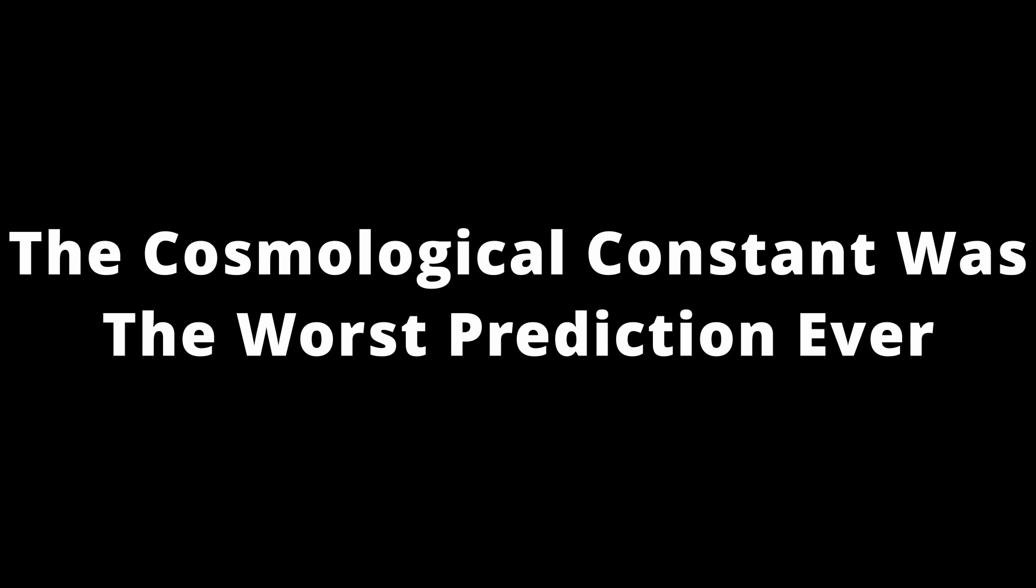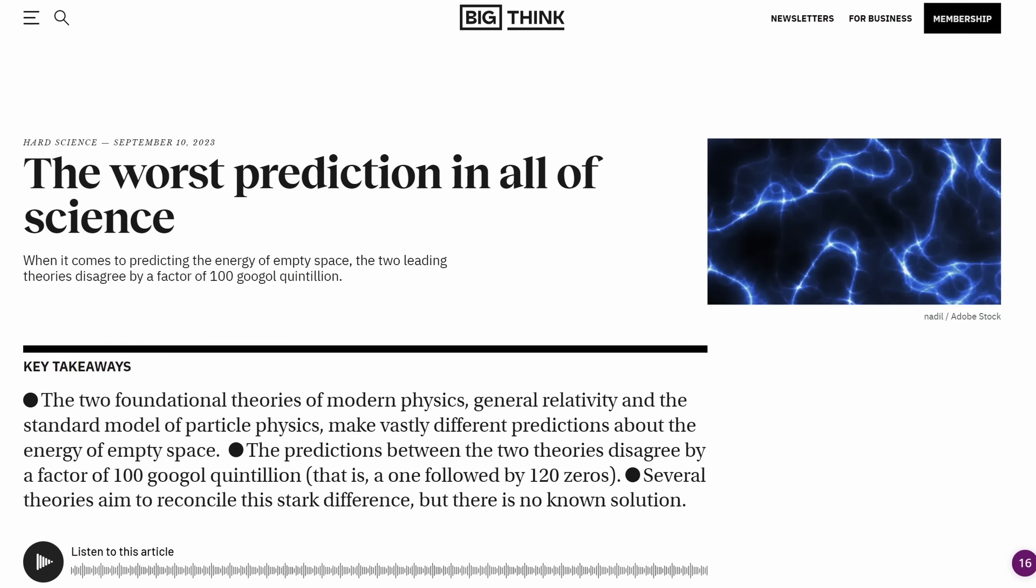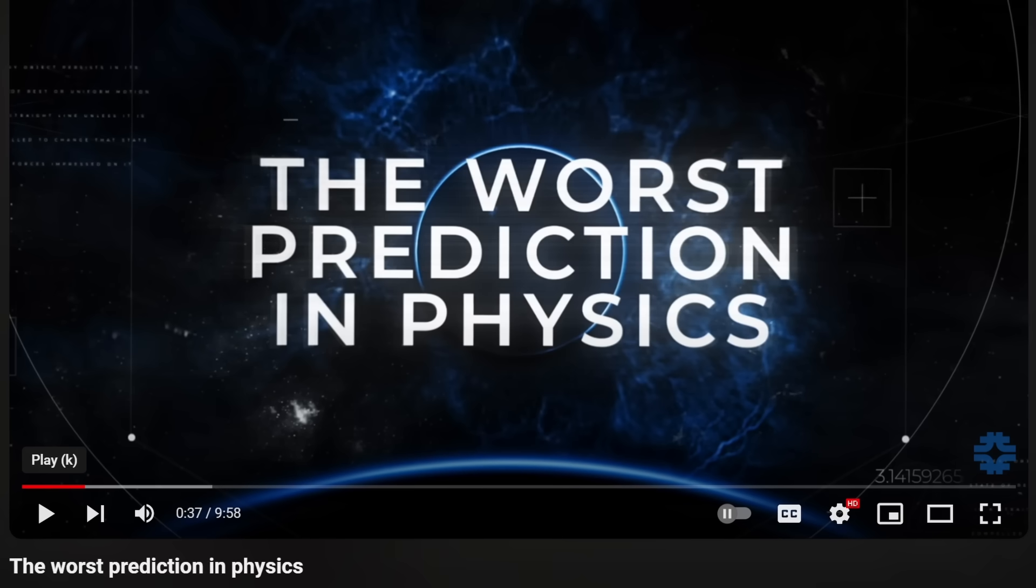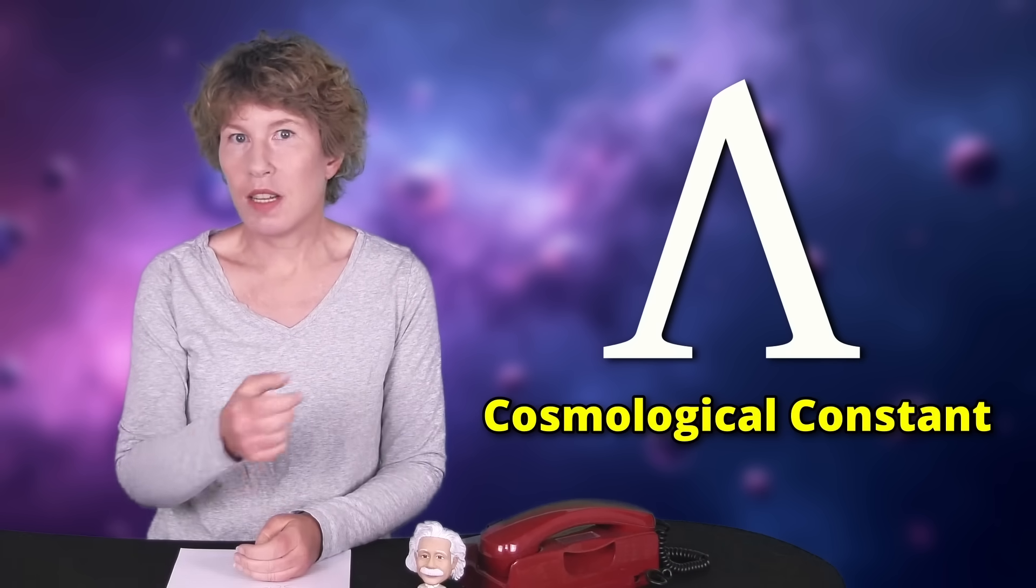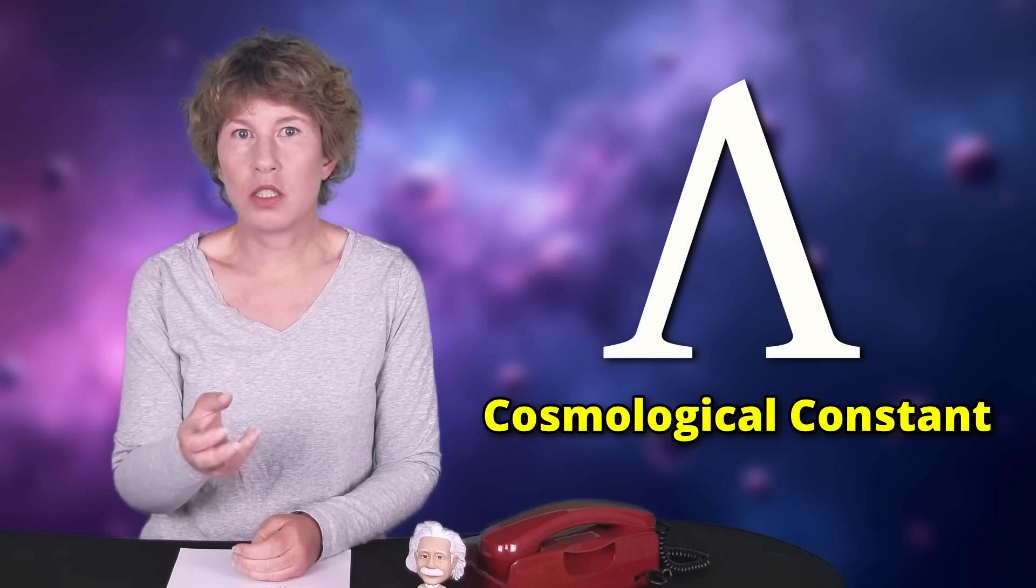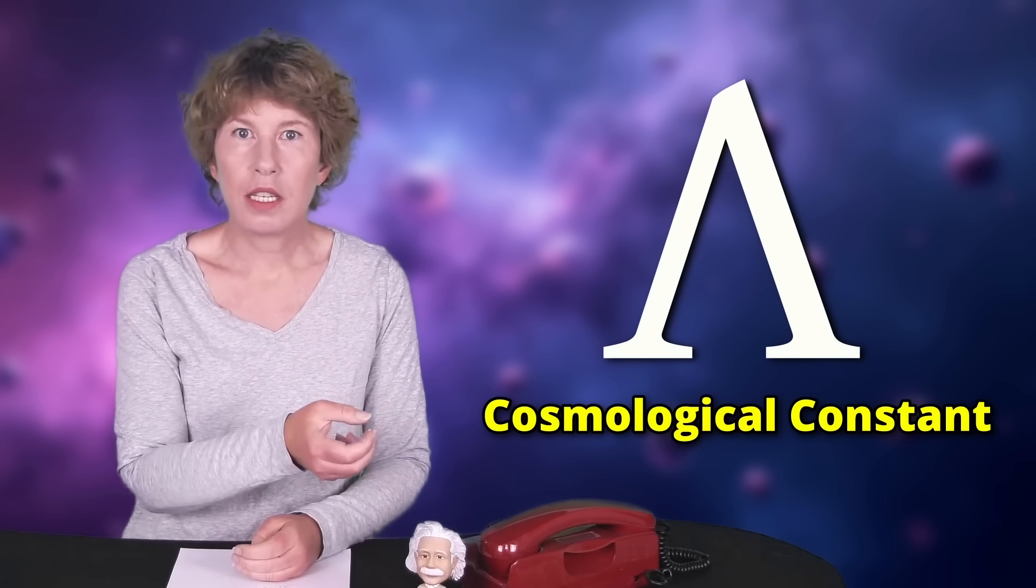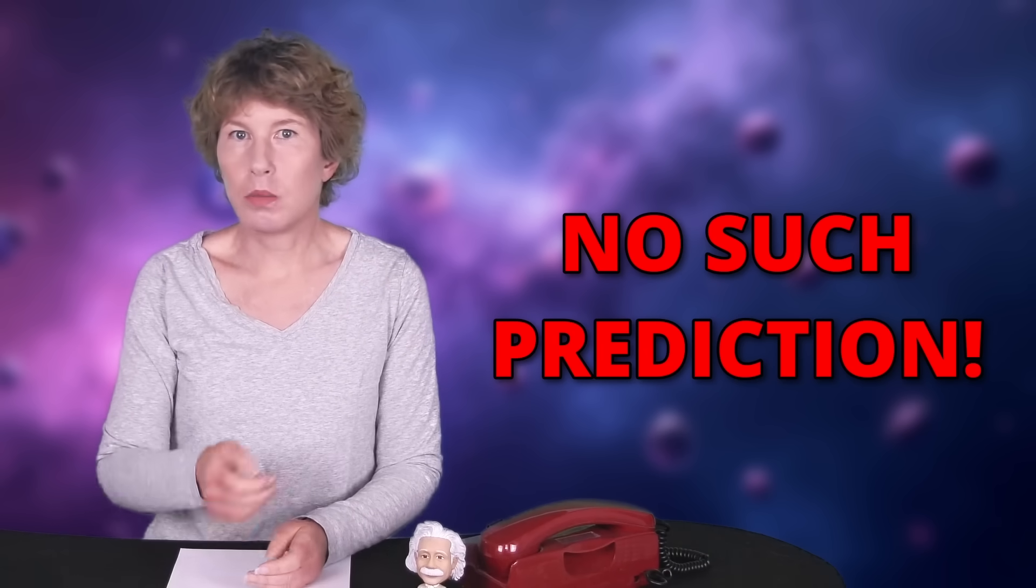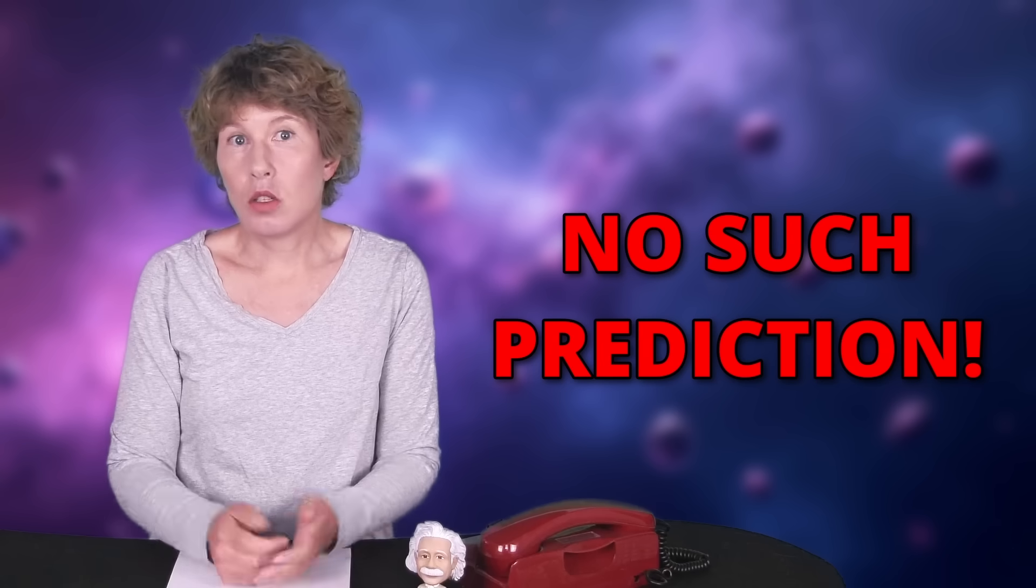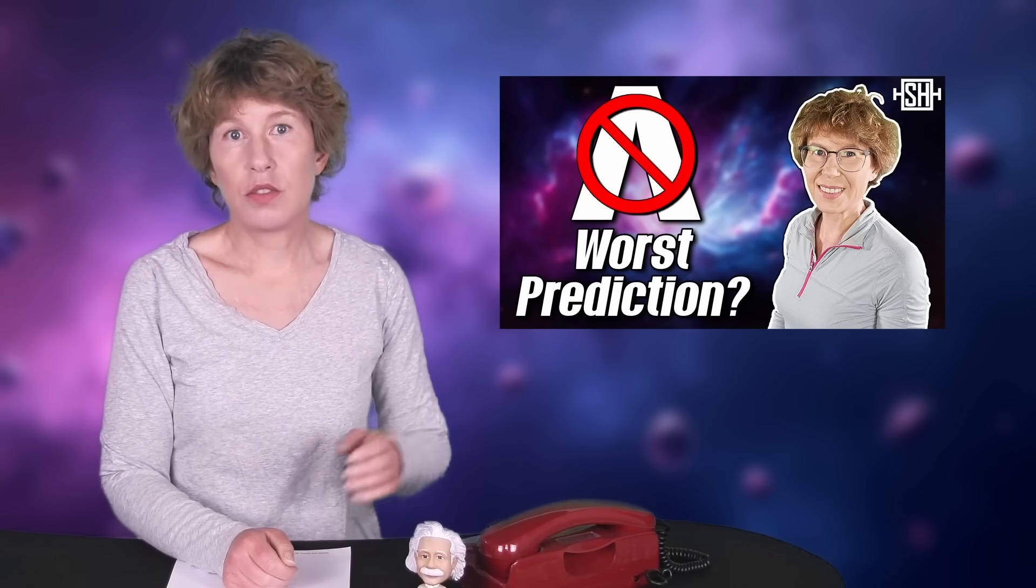6. The cosmological constant was the worst prediction ever, wrong by 120 orders of magnitude. This is a catchy story that people keep repeating. Unfortunately, it's not true. There's never been such a prediction. What physicists actually mean when they talk about this is that they have a way to estimate what they think the cosmological constant should be, and that estimate is crudely wrong. What you can conclude from this is that their way to make this estimate is nonsense, but that's not a story they like to tell. I talked about this in more detail in a recent video.